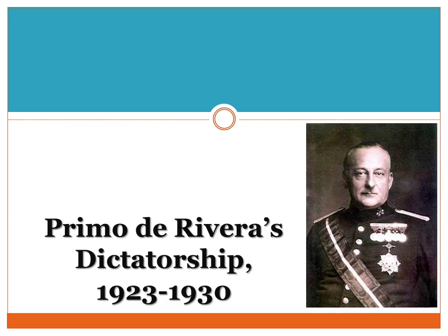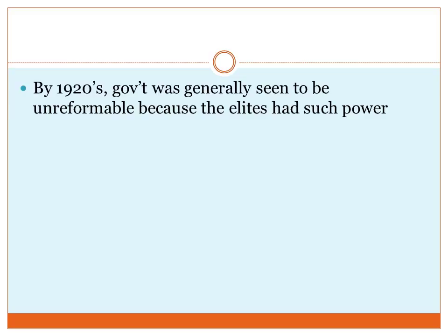Which brings us to discussing Primo de Rivera's dictatorship, which lasted from 1923 to 1930. It wasn't a very long period of time, but it was enough to disrupt Spain quite a bit. By the time you get to the 1920s, the government was generally seen by almost everybody to be unreformable, because the elites — the nobility, the landowners, the factory owners — had concentrated power into their hands so much that there was no way for people to fix the government within the system.